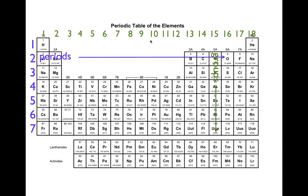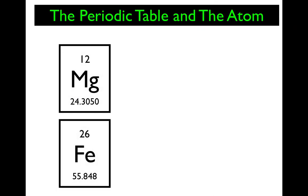For each block on the periodic table, for each element, we have — as I'm going to explain — this whole number which we call the atomic number, this element symbol, and then there's the average atomic mass. One thing that's missing from this periodic table are the names of the elements, but this is the standard way a periodic table looks: atomic number, symbol, average atomic mass.